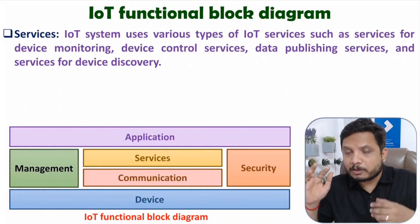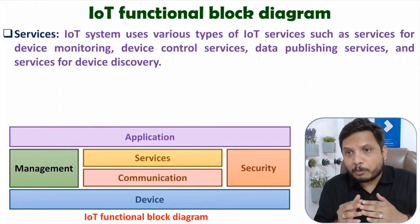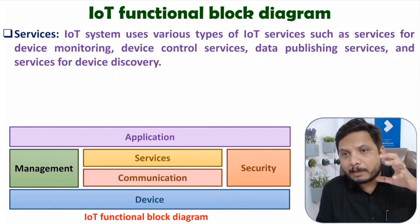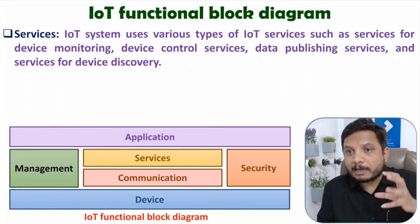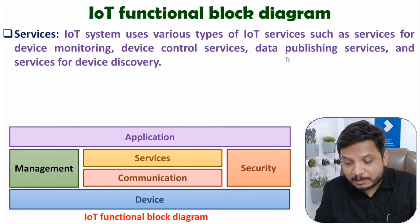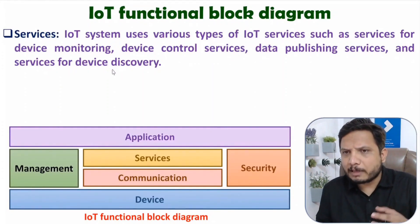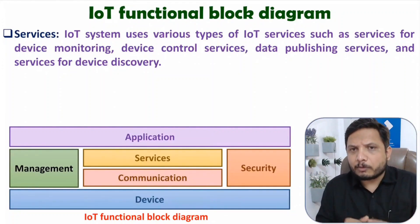Another service is based on data publishing. Continuously, the data generated by sensors will be uploaded to the cloud. After formatting this data, it is published. First you gather the data, then extract meaningful insights. Algorithms using artificial intelligence or machine learning will segregate the data, and on this basis we will publish only the meaningful data. Along with that, there are also services based on device discovery — how devices are functioning and how much data is coming from a particular region.